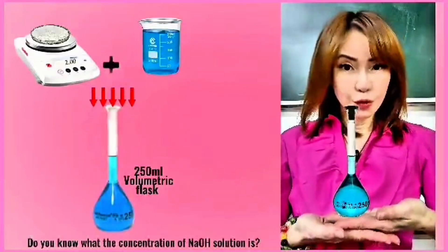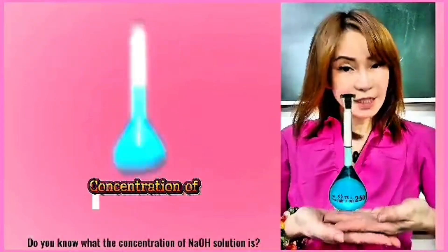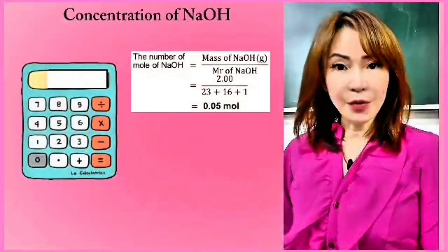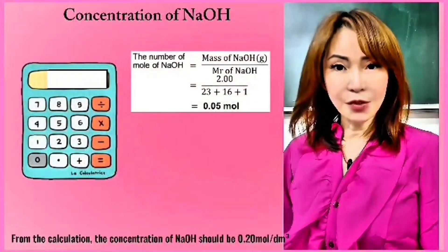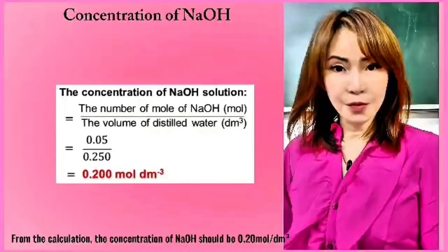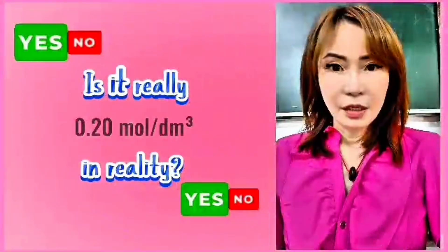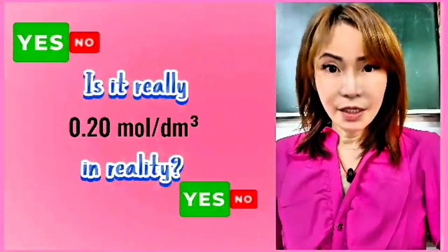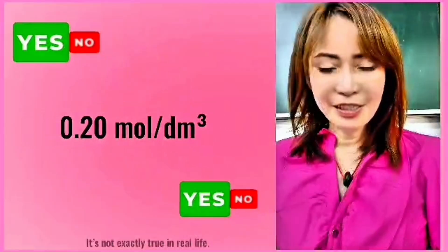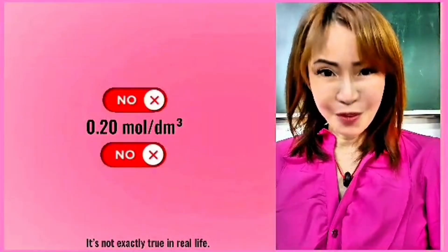From the calculations, the concentration of the NaOH solution should be 0.2 mol dm⁻³. But wait — is it really 0.2 mol dm⁻³? In reality, it's not exactly true.